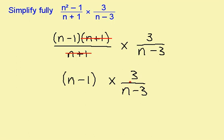This part stays the same. I now need to multiply these two together. This gives me 3 multiplied by n minus 1 over n minus 3.